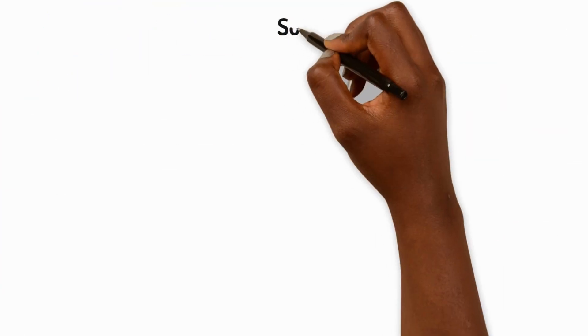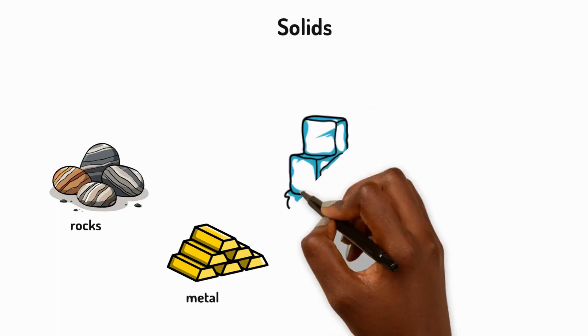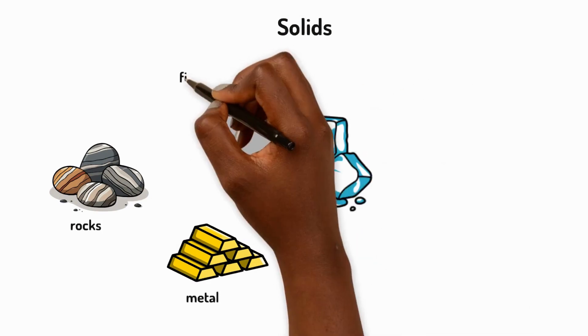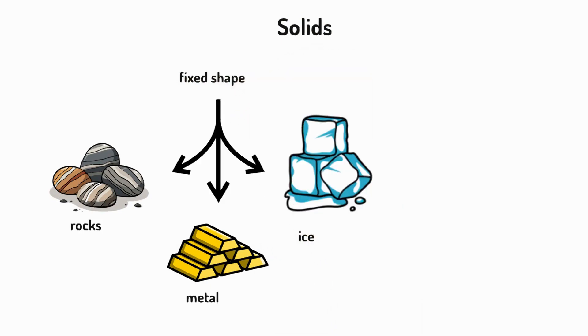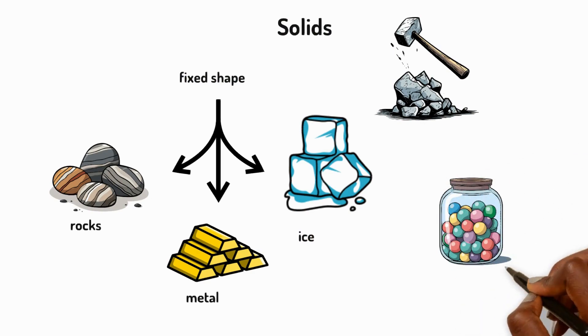Let's start with solids. Examples of solids are rocks, metal, and ice. A solid has a fixed shape which does not change unless a force is used to change it. Solids do not change shape when placed in a container.